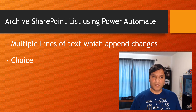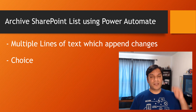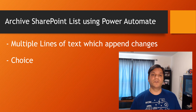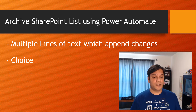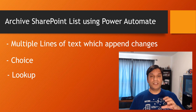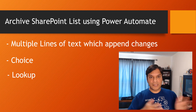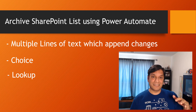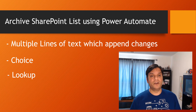The next column type is choice — choice columns can sometimes have single selections or multiple selections. How do I go ahead and copy all of those selected items using Power Automate? Lookup is another example, because with lookup you not only have to reference what those items are but where those lookups are coming from.